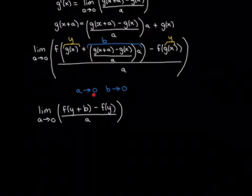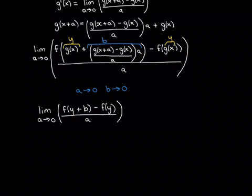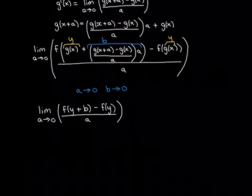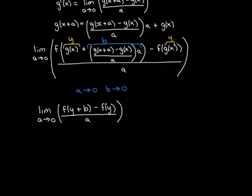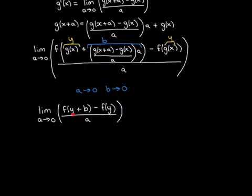Note that as a approaches 0, the quantity g of x plus a minus g of x over a approaches g prime of x, and it is multiplied by a which also goes to 0. So this whole term we're calling b vanishes to 0 as a goes to 0 — that's important and we'll use it later. We also rename g of x as y. Making these substitutions, everything becomes much simpler: the expression reduces to the limit of f of y plus b minus f of y, over a.